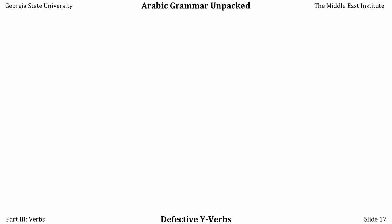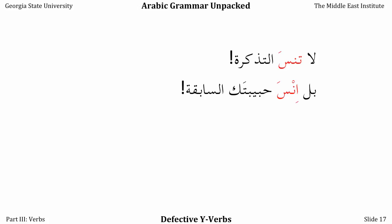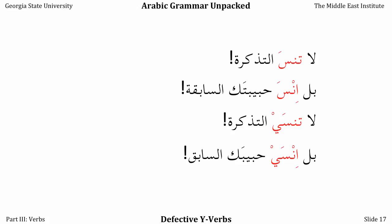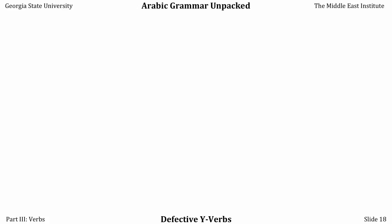When forming commands out of these verbs — since commands are in the majzoom — the same rule applies. La tansa al-tadhkira — Don't forget the ticket, talking to a masculine singular person. Bal insa habeebataka al-sabiqa — But forget your ex-girlfriend. Here we have the affirmative command. Because the first root letter in the verb has sukuun over it, we have to add the corresponding helping vowel to make the affirmative command, so the command is insa. But if we're talking to a woman, we'd say la tansay al-tadhkira. And if we were to command her affirmatively, we'd say bal insay habeebakal-saabiq — Do forget your ex-boyfriend. If it's plural, the same pattern applies.